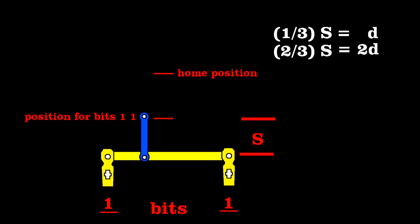To encode bits one-one, pull both tabs a distance s, and you'll move the blue bar by s units, or 3D. And that's position three.